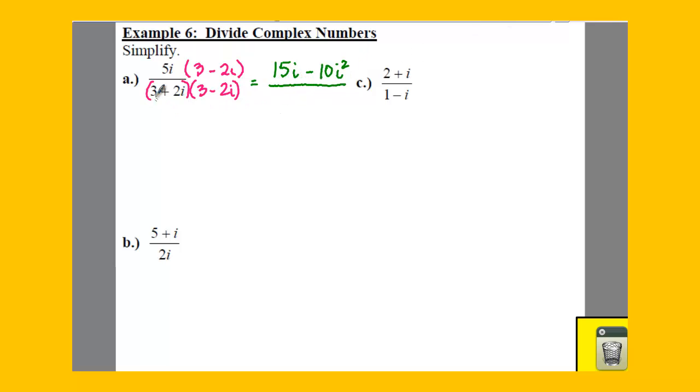So you take your first term and you square it, so you get a 9. Minus, you get 2i squared. Now if you take a 2i and square that, you have to square the 2 and you have to square the i. So you get a 4i squared.